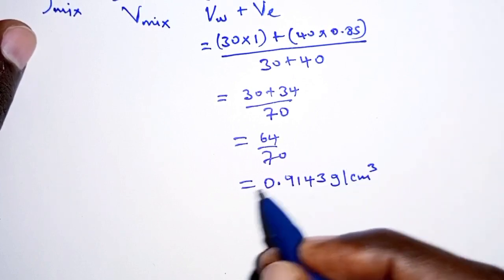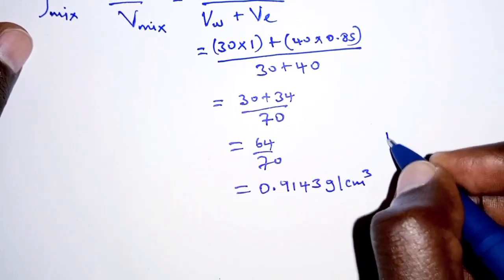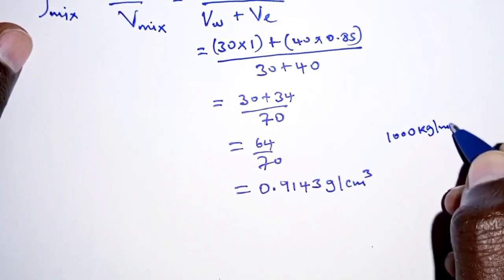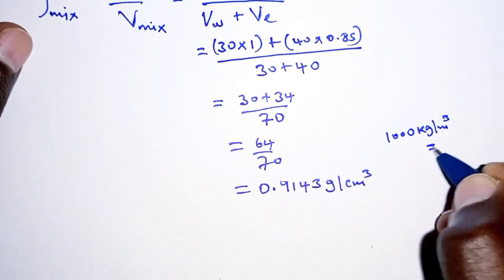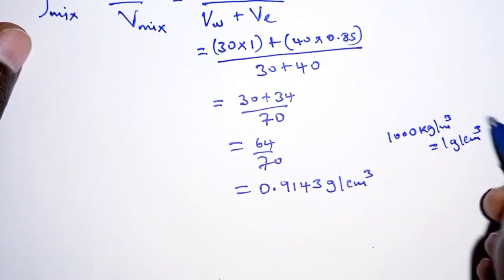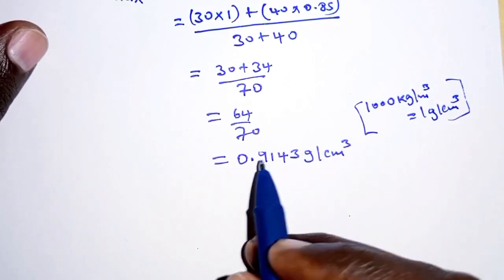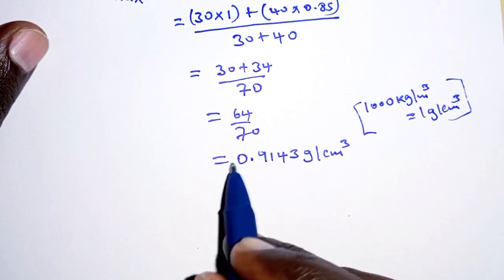If you were to determine this in kilograms per cubic meter, remember a thousand kilograms per cubic meter equals one gram per cubic centimeter. So we can use this in our conversions, so that means we will multiply this by a thousand.